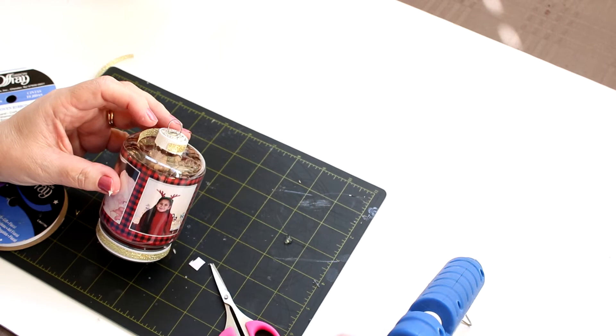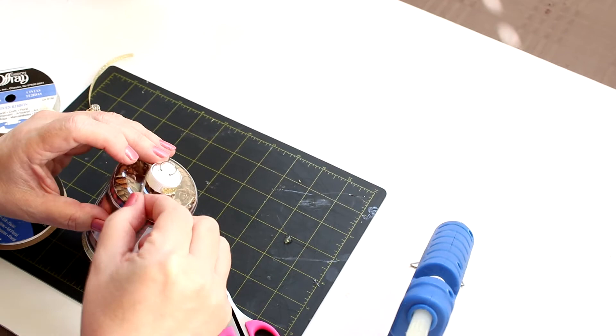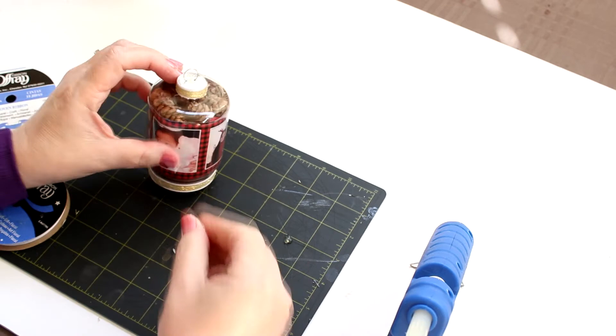There we go. Almost. One thing I do hate about glue guns is all those little strings you get. All right. So that's good right there.